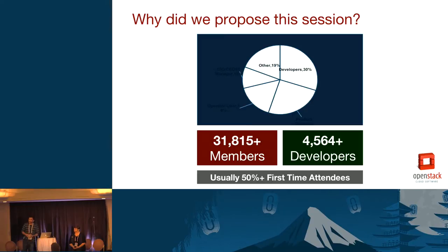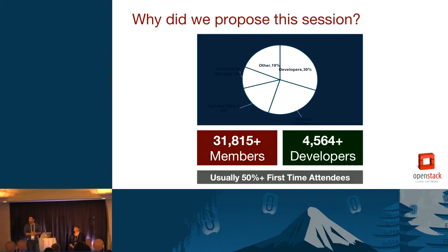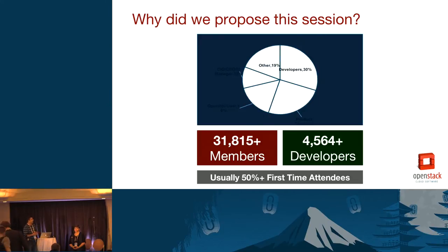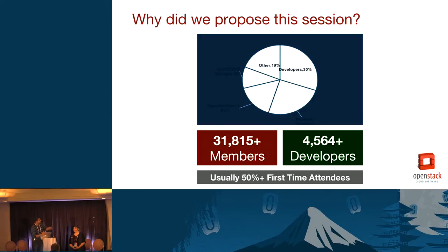So why did we propose a session? OpenStack has tremendous velocity and a really big developer ecosystem — upwards of 4,500-plus developers in the community. There are also over 31,000 members registered to the foundation. So out of 5,000 developers, there's a significant amount of people that aren't really developing but yet they're participating in the community, and that's what we want to share — how to continue that aspect and get involved further. This slide at the top shows the distribution of people who went to Vancouver: 30% developers, 6% operators, 10% management — a good mix of people with different backgrounds and skill sets coming together at every summit.